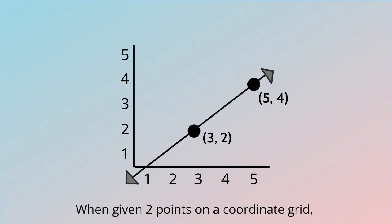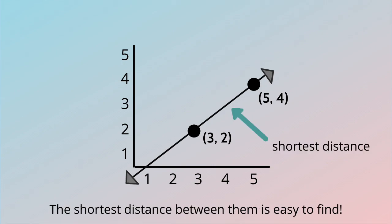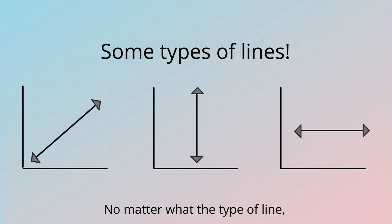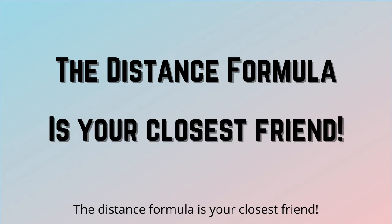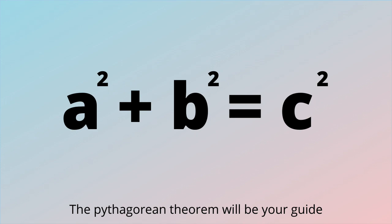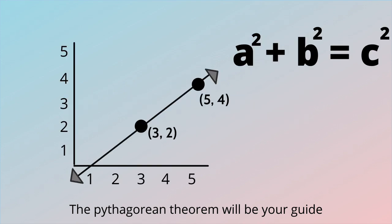When given two points on a coordinate grid, the shortest distance between them is easy to find. No matter what the type of line, the distance formula is your closest friend. The Pythagorean theorem will be your guide.